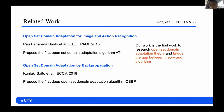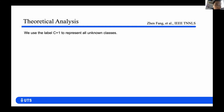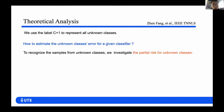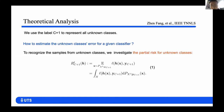Until now, our theoretical work has been cited in many papers, including top conference papers such as ICML. Now let's get into our theoretical analysis. For simplicity, we use label C+1 to represent all unknown classes. The first question I want to ask is: how to estimate the unknown class error for a given classifier? So we investigate the partial risk for unknown classes, which is defined in Equation 1. The partial risk for unknown classes means the error for a given classifier under the target marginal distribution conditioned on unknown classes.